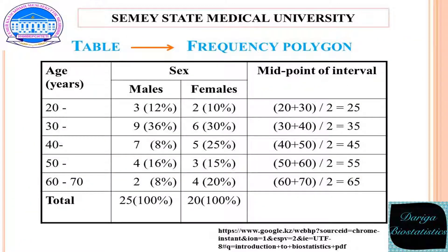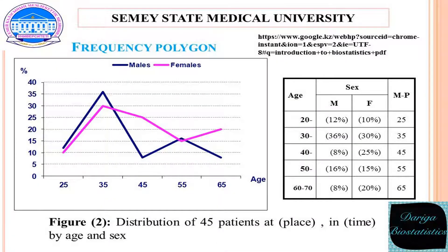The next table depicts distribution according to age and gender. For drawing a frequency polygon, we can calculate the midpoint of the interval for showing trends. This illustration is a frequency polygon. Frequency polygons are a graphical device for understanding the shapes of distributions. They serve the same purpose as histograms, but are especially helpful for comparing sets of data. Frequency polygons are also a good choice for displaying cumulative frequency distributions, and it is possible to plot two cumulative frequency distributions in the same graph.